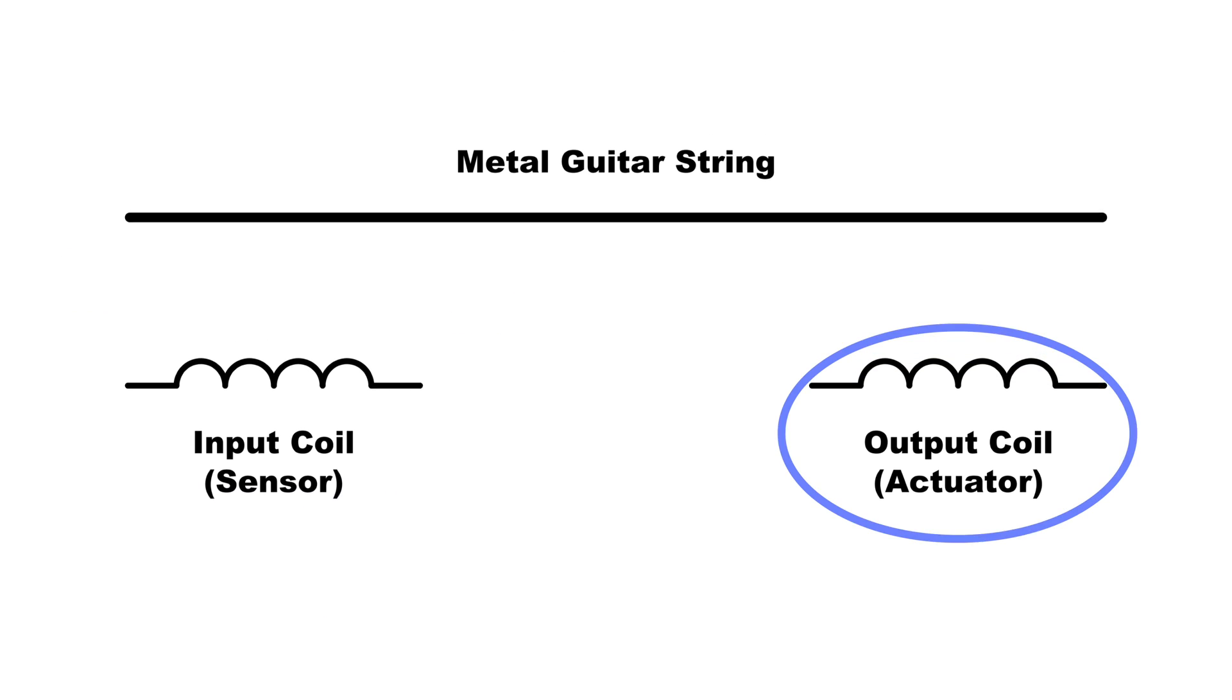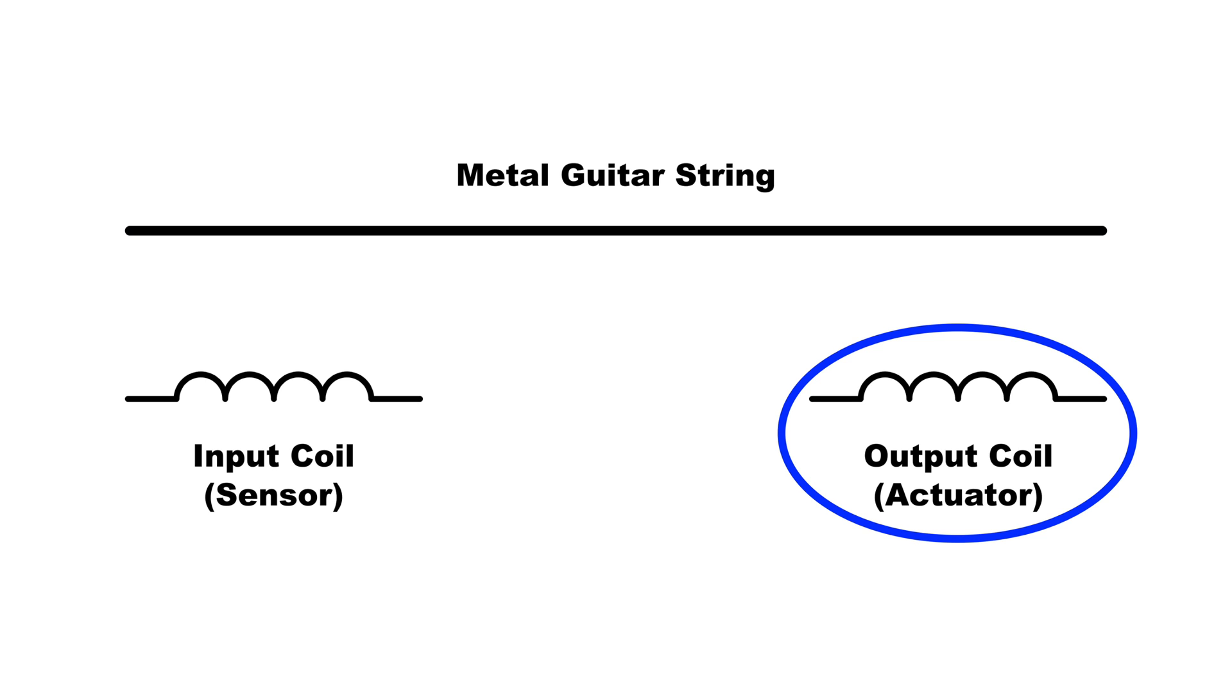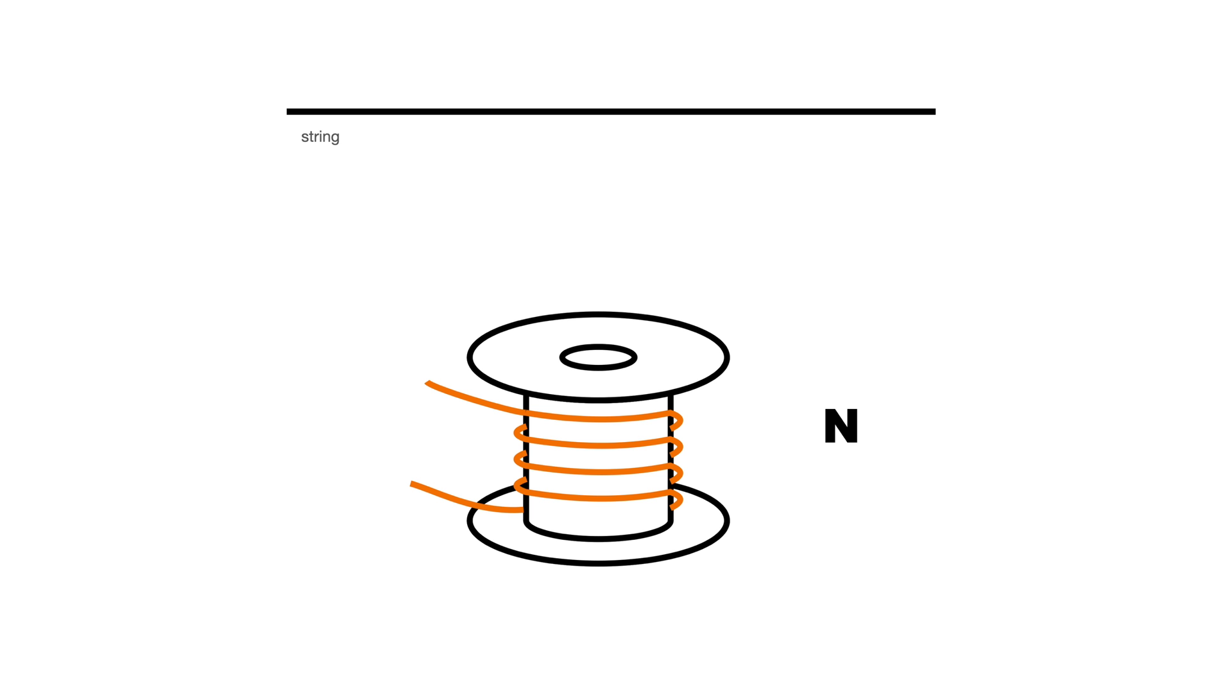So now I'll analyze the output coil, which I'm going to use as an actuator to actually push and pull on the guitar string. So again I have a metal guitar string and I have a bobbin with n turns of wire on it and I have a permanent magnet which magnetizes the guitar string. And again the fact of the magnet being in the coil doesn't matter.